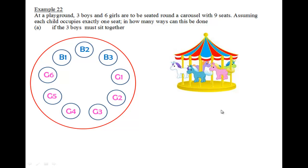If the 3 boys must sit together, then we have to make sure that no matter how we move them around, 3 of them must be side by side. So in other words, why not we group them together as one single group?